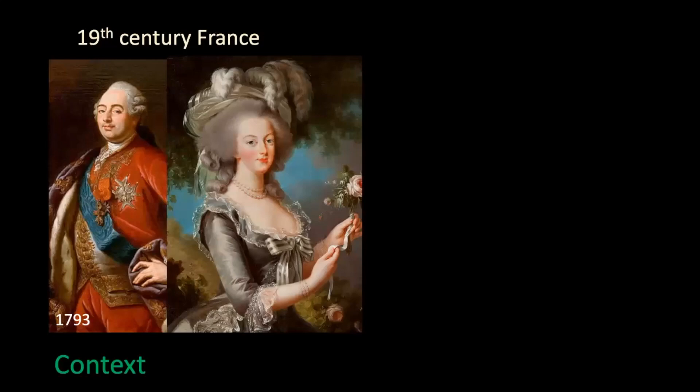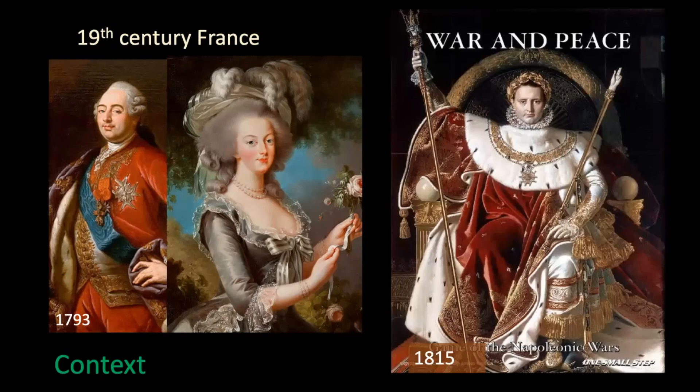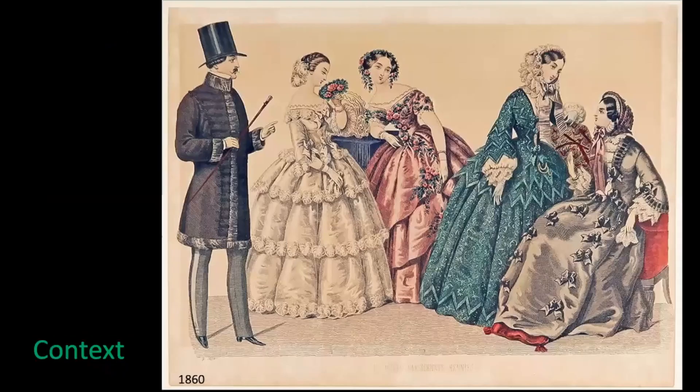For example, before 19th-century France, you had the French Revolution and the king and queen were executed in public, bringing huge upheaval to society. This was followed by Napoleon, who took over for a while and even made himself emperor, but this brought a considerable amount of war as well as periods of peace to France. This collapsed in 1815, so society was turned upside down once more.